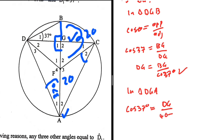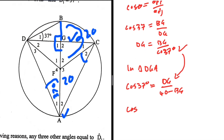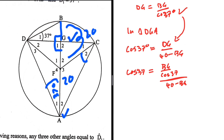Let's substitute DG from triangle DGB into the triangle DGA equation. We get cos 37 equals (BG over cos 37) divided by (40 minus BG). Let me cross-multiply to avoid mistakes: cos 37 multiplied by (40 minus BG) equals BG divided by cos 37.